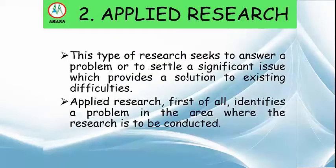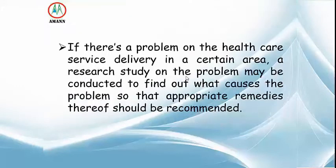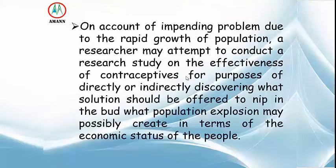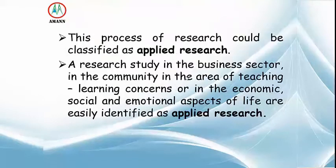Number two is applied research. This type of research seeks to answer a problem or settle a significant issue which provides a solution to existing difficulties. Applied research first identifies a problem in the area where the research is to be conducted. For example, if there is a problem in healthcare service delivery in a certain area, a study may be conducted to find out the cause so that appropriate remedies can be recommended. On account of population growth, a researcher may study the effectiveness of contraceptives to discover solutions to the economic impacts of population explosion. Such a process is classified as applied research.